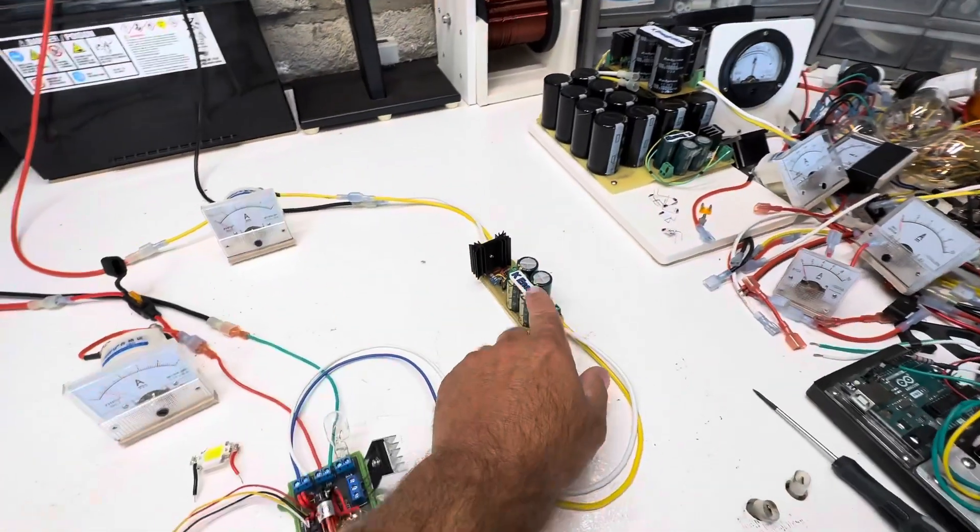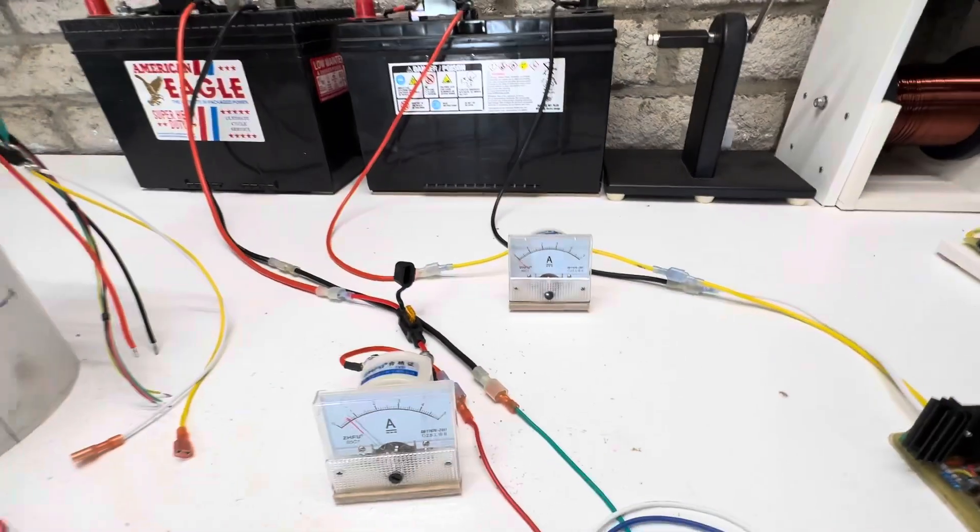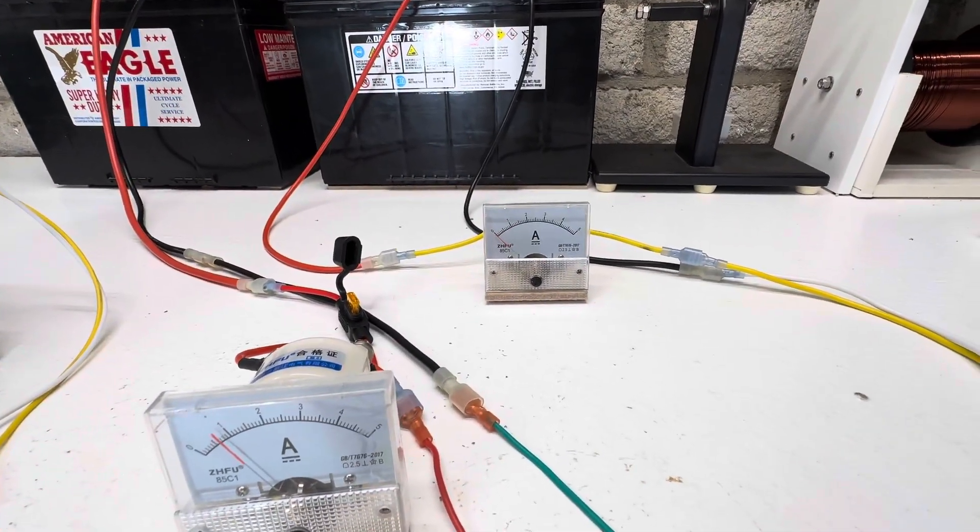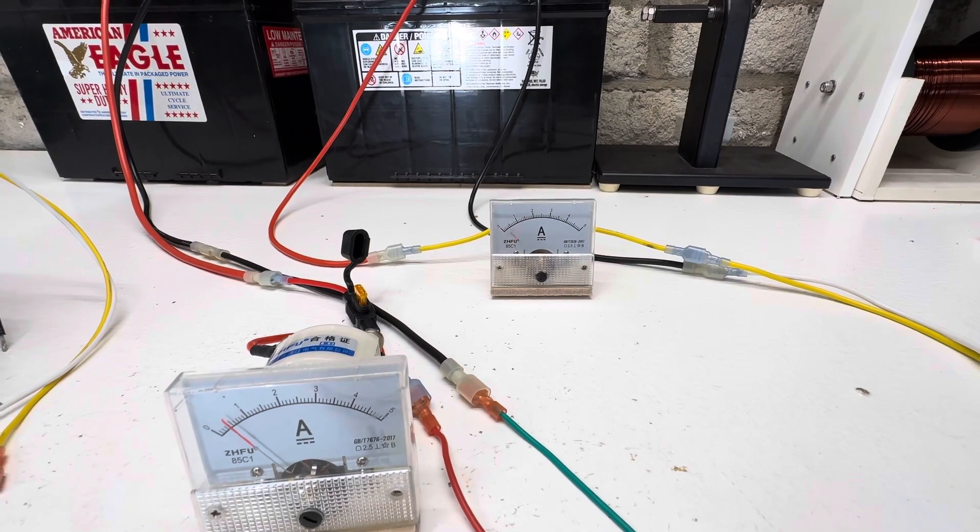So the output comes through, goes into one of my cap dumps, and then it's charging that battery right there. Pulse is almost two amps.